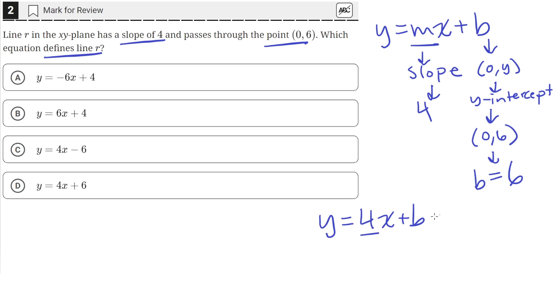and b should be 6. So 4 is the slope, and b is the y-value at the y-intercept.